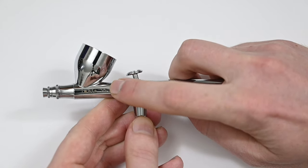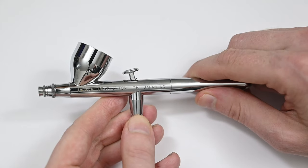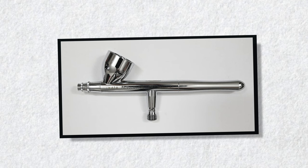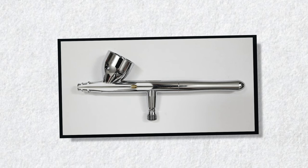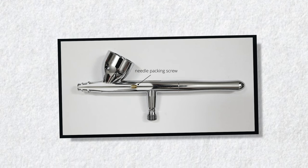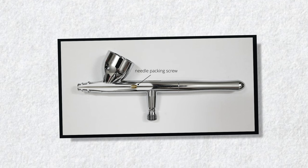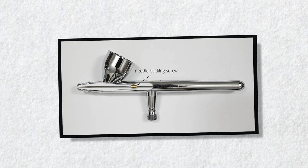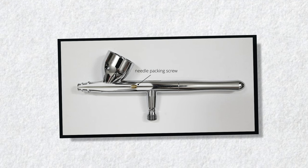It's located just behind the paint cup, and this of course is the needle packing screw. Over in Photoshop, I set up a few images to show how this works. The needle of the airbrush slides through this screw and creates a seal.